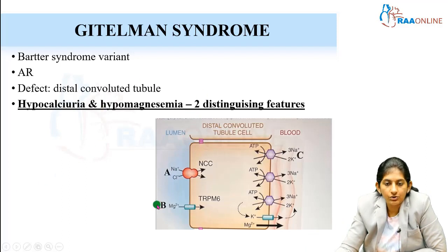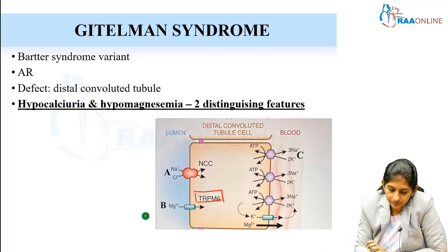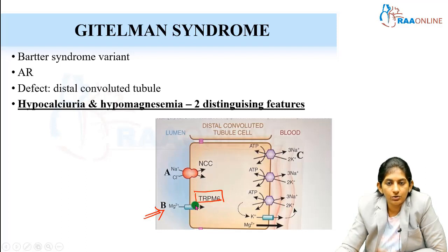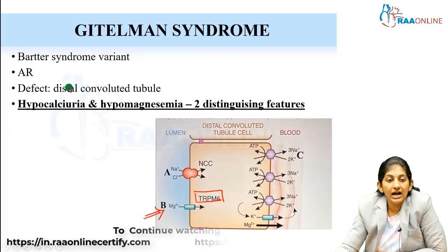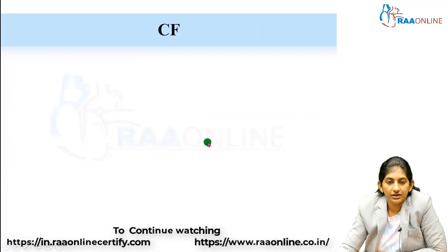In Gitelman syndrome, the TRPM6 channel or transporter is responsible for the reabsorption of magnesium, and it is defective. So definitely in all cases there will be hypomagnesemia, but in Bartter syndrome hypomagnesemia will not be present and there will be hypercalciuria but not hypocalciuria. This will resemble thiazide diuretic usage.